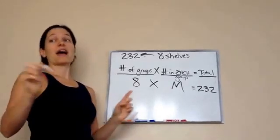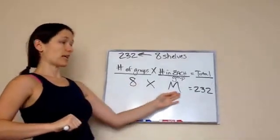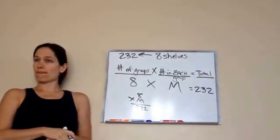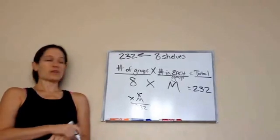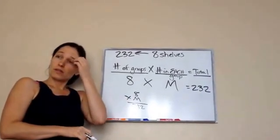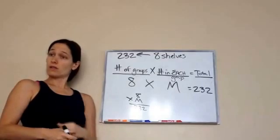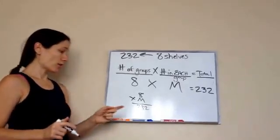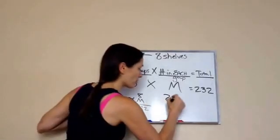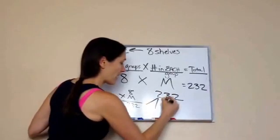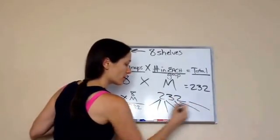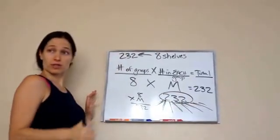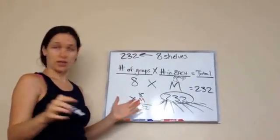How do we get the answer? Eight times M equals 232. Do you remember doing these kind of problems? What's the opposite of multiplication? Subtraction? No, that's the opposite of adding. Division — very good. So, it's like I have 232 books and I'm going to divide them into how many shelves? Eight. So I'm dividing 232 into eight different shelves.